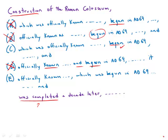Answer choice E — 'officially known, which was begun and was completed' — is also correctly parallel on the surface, so both C and E construct the parallelism correctly. However, the problem with E is that we have 'construction of the Colosseum, officially known as..., which was begun and was completed...' and we go all the way to the end of the sentence and never get a main verb. The subject 'construction' does not have a verb.